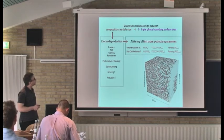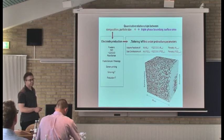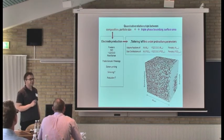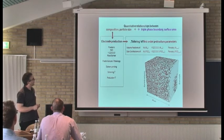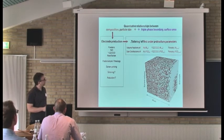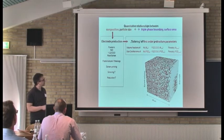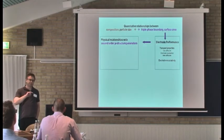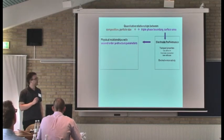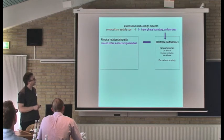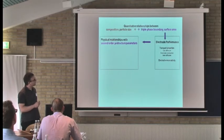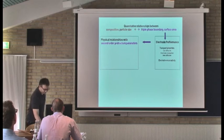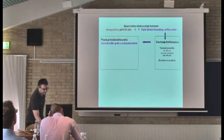I distinguish two groups. I call the first group the first-order microstructural parameters: volume fraction and particle size. These are parameters that we have some influence over during electrode production — we can change the volume fraction of our phases and, to a certain degree, our size distributions. But these first-order parameters do not have a direct influence on performance. The higher-order parameters — triple phase boundary surface area — are the parameters with physical relationships that we can describe in terms of electrochemical performance or transport properties.